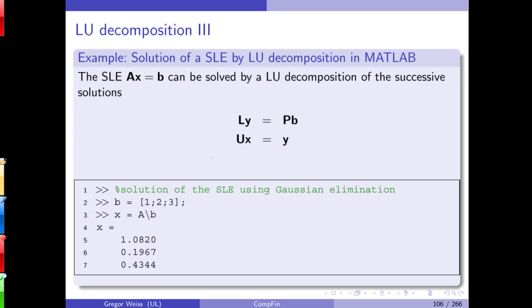You can use the LU decomposition directly for solving a system of linear equations. Take A times X equals B. Since A equals L times U, you have L times U times X equals B. You calculate L times Y equals P times B, then U times X equals Y, and this gives you the result X you're looking for.